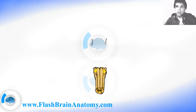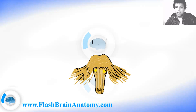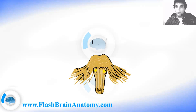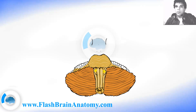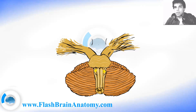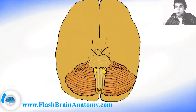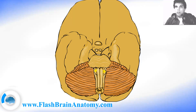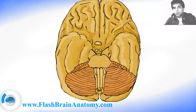First we have the medulla oblongata, then the pons, and we have the cerebellum. This structure is called the cerebral cross, and the rest of the brain mass is here with the temporal lobes and the frontal lobes. Okay, and here are the cranial nerves.